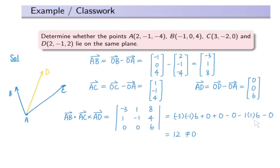By expanding the determinant, we find that its value is 12, which is non-zero. Since the value is non-zero, the volume of the parallelepiped formed by these three vectors is non-zero. Therefore, the three vectors are not coplanar, which also means the four points do not lie on the same plane.